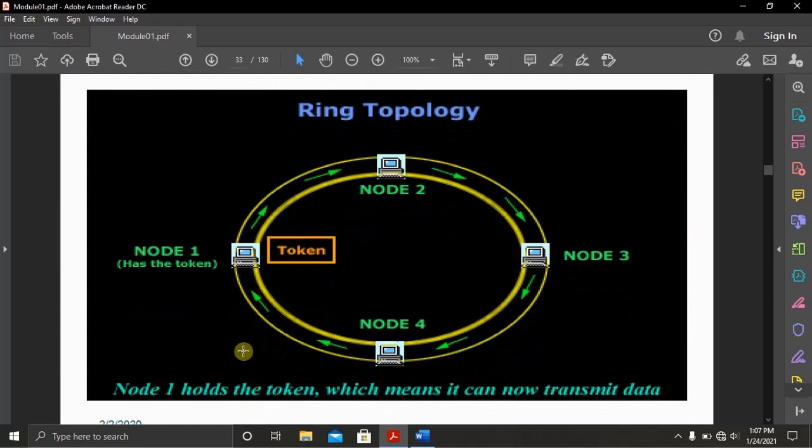In a ring topology, all the computers or all the nodes are connected into a closed loop. When data is transmitted from node 1, it is transmitted to node 2 and then it is amplified again to minimize the loss of the information or the loss of the data that is being transmitted.